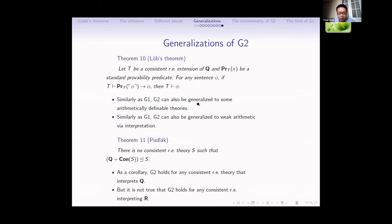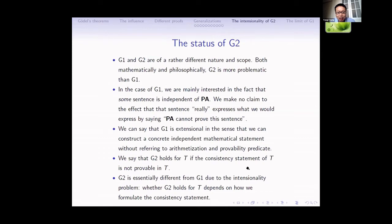Similar to G1, G2 can be generalized to some arithmetically definable theories and also to some weak arithmetic using the notion of interpretation. For example, Pudlák proved an important theorem: there exists an RE theory A such that Q plus Con(A) is interpretable in A. An easy corollary is that G2 holds for any consistent RE theory that interprets Q, but it is not true that G2 holds for any consistent RE theory that interprets R. So there is a difference.